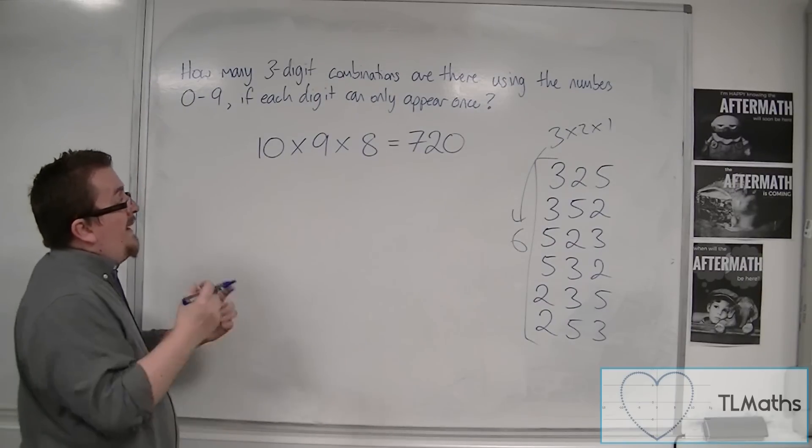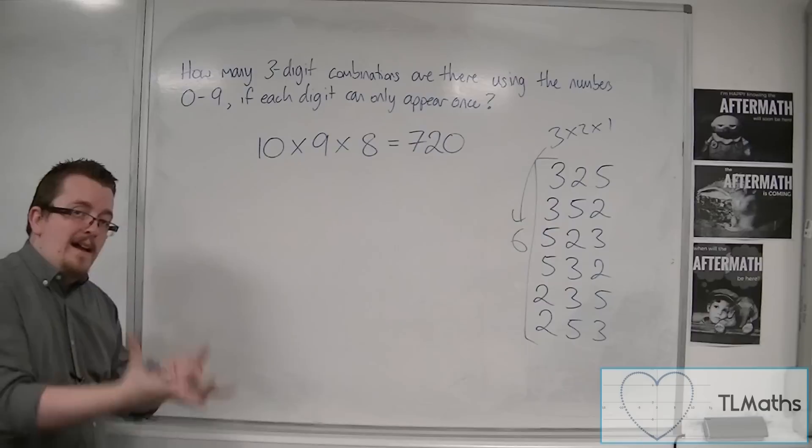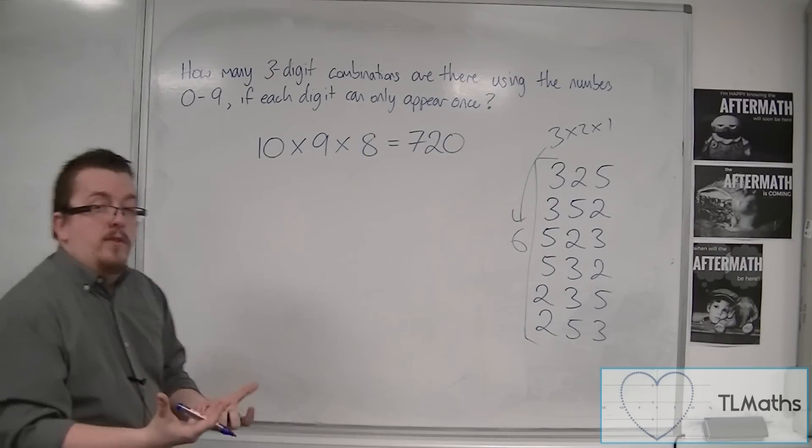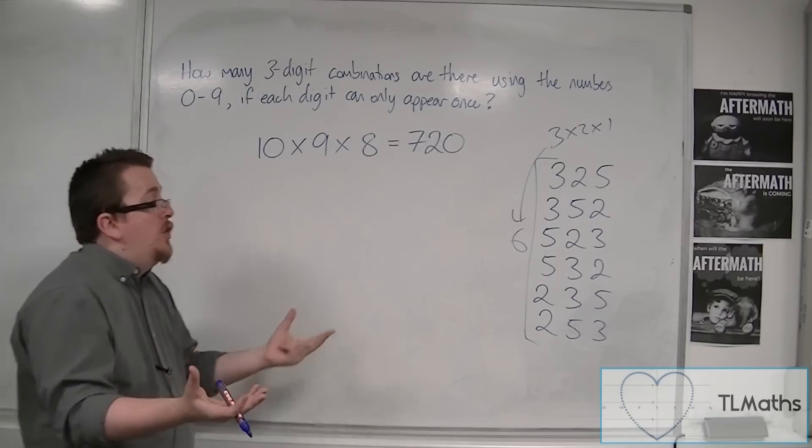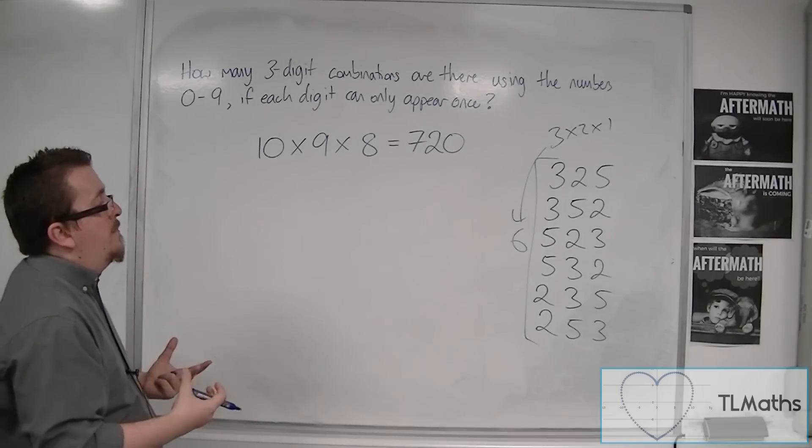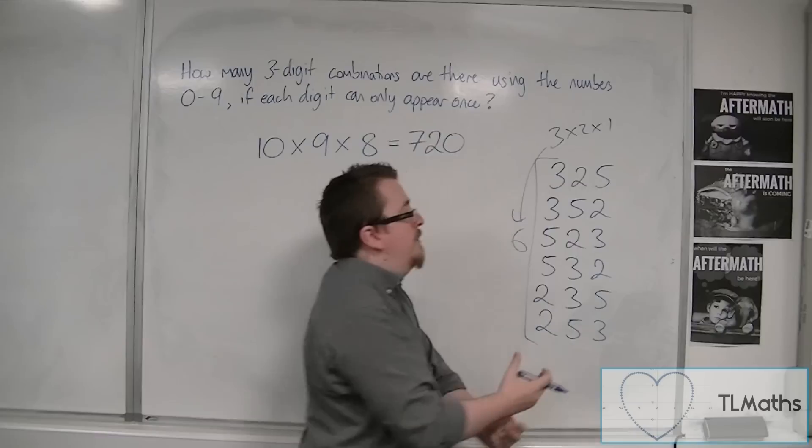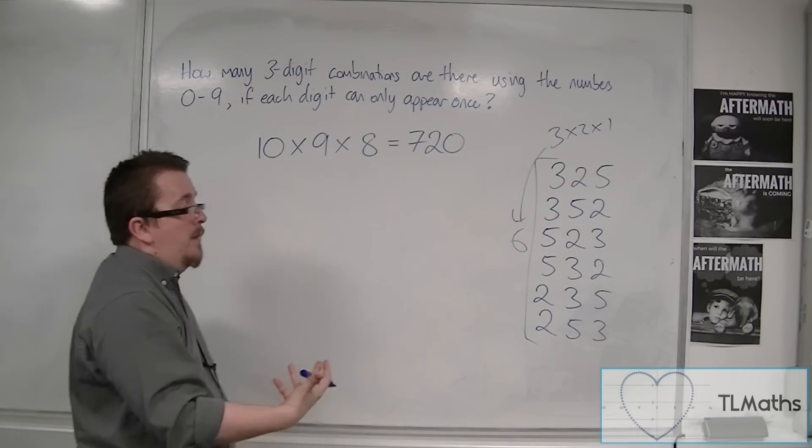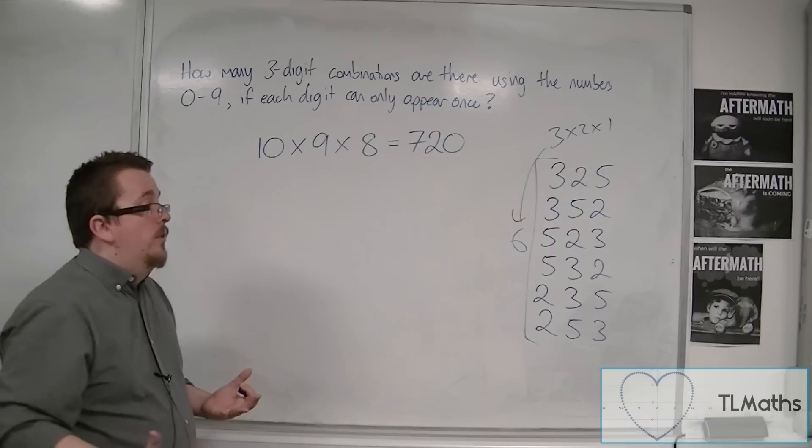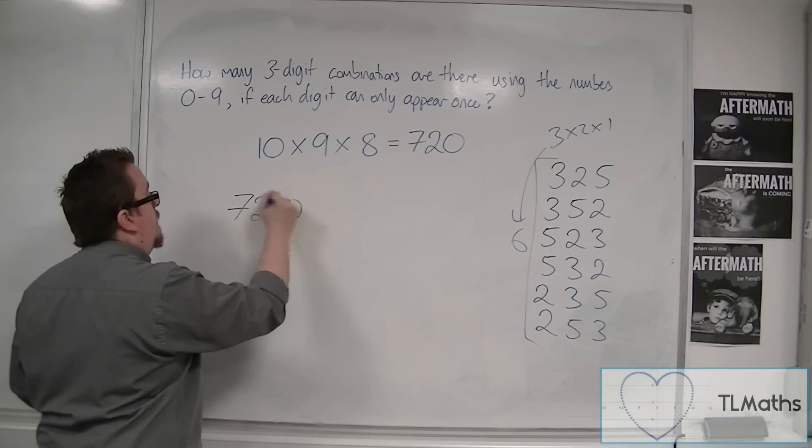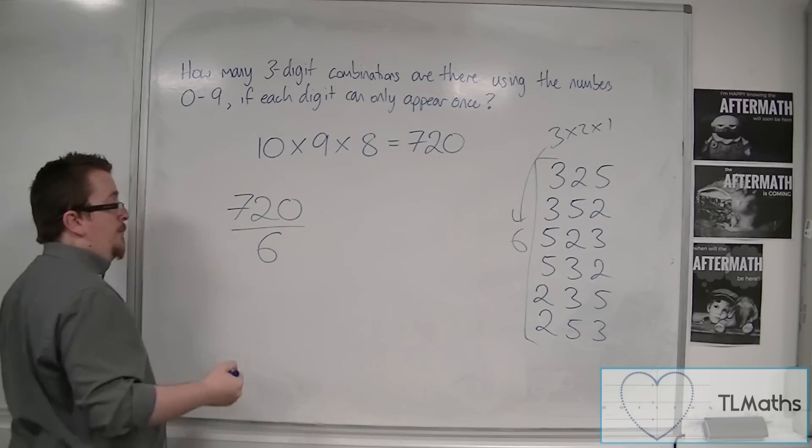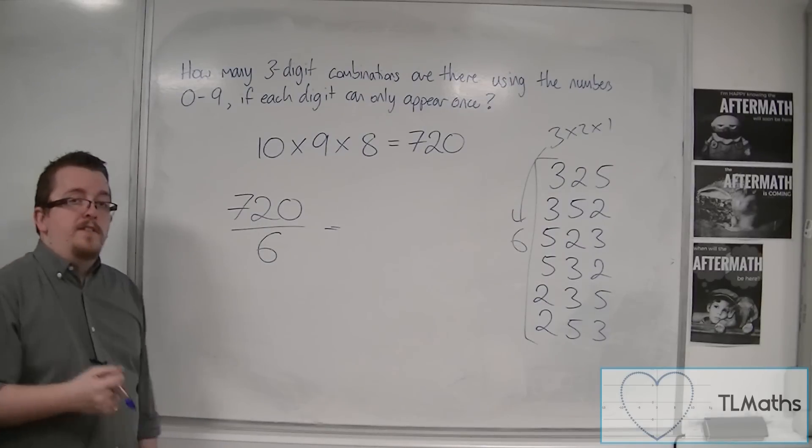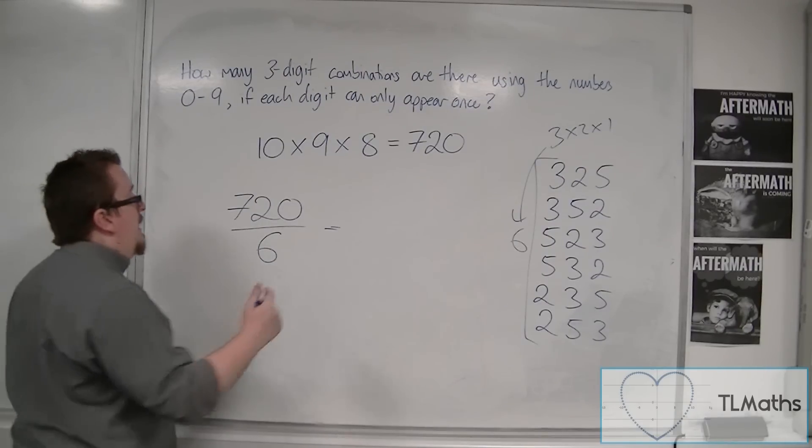So for each of the three digits that we have, be it 1, 2, 3, or 9, 7, 2, or whatever, for each of them, there are 6 variations that are repetitions. So we have 720, and we need to divide that by 6. So 720 divided by 6 is 120.